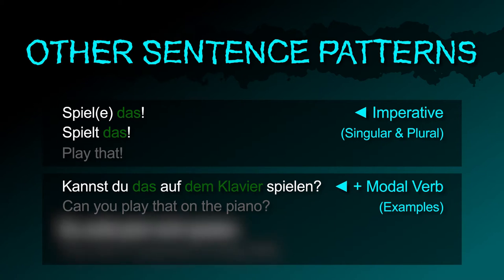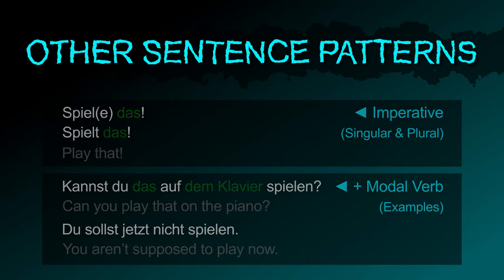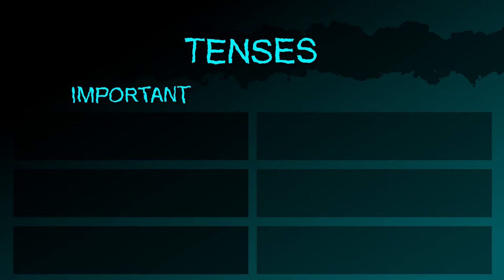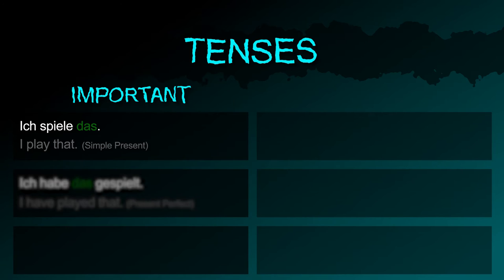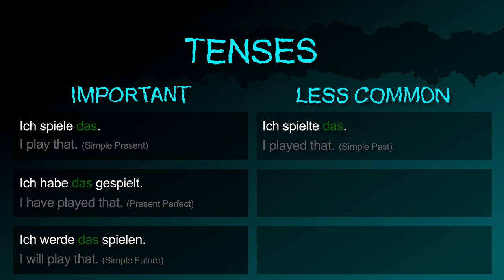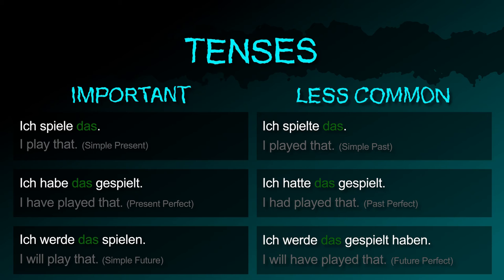du sollst jetzt nicht spielen. Important tenses: ich spiele das (present), ich habe das gespielt (perfect), ich werde das spielen (future I). Less common tenses: ich spielte das (simple past), ich hatte das gespielt (past perfect), ich werde das gespielt haben (future II).